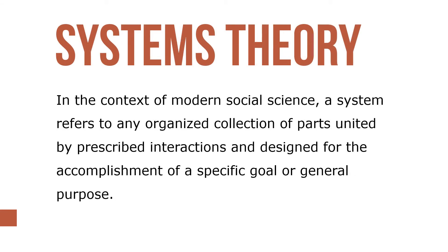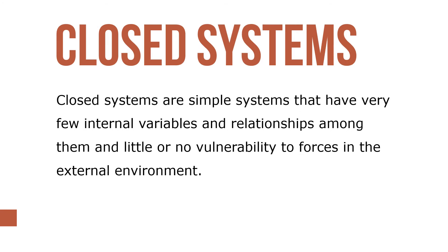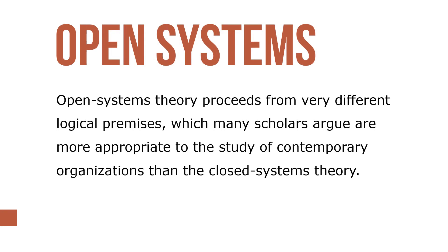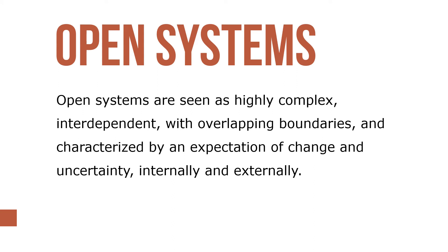In the context of modern social science, a system refers to any organized collection of parts united by prescribed interactions and designed for the accomplishment of a specific goal or general purpose. Closed systems are simple systems that have very few internal variables and relationships among them and little or no vulnerability to forces in the external environment. Open systems theory proceeds from very different logical premises, which many scholars argue are more appropriate to the study of contemporary organizations. Open systems are seen as highly complex, interdependent, with overlapping boundaries, and characterized by an expectation of change and uncertainty internally and externally.